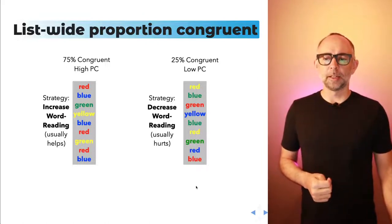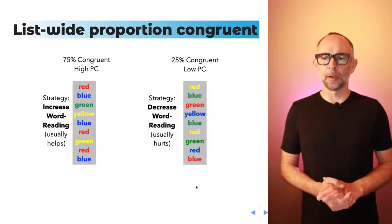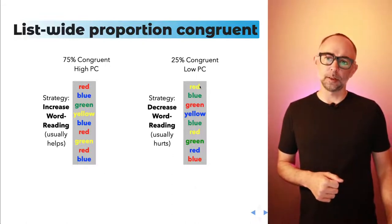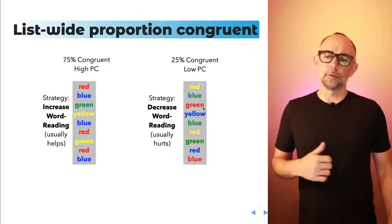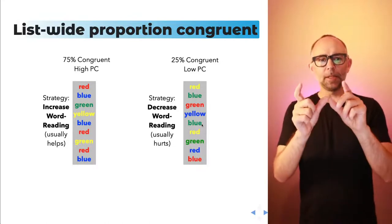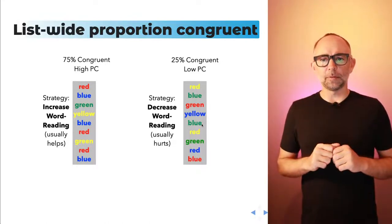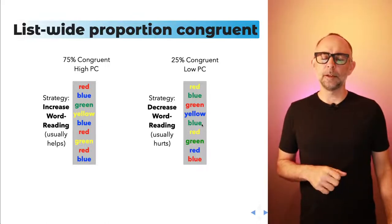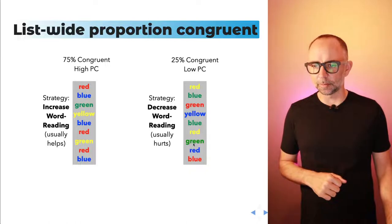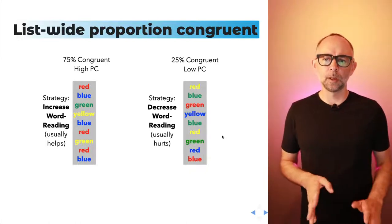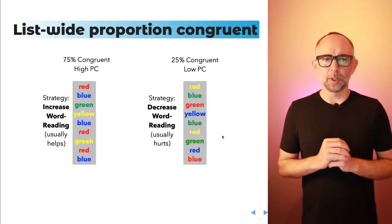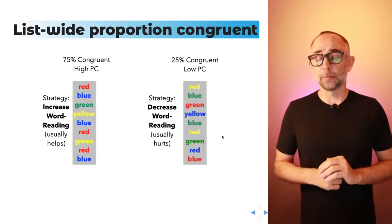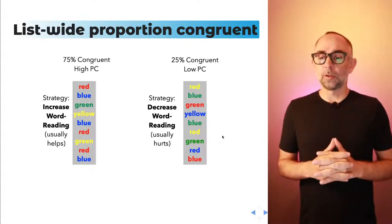Over here we have a different situation — a Low Proportion Congruent list where most items are incongruent: yellow in red, green in blue, red in green, blue in yellow, and so on. Almost every time, the word gives you the wrong answer. So you have to really try to ignore that word almost every time and focus on the color. Every once in a while the word and color will match, but not very often. If most trials require ignoring the word, you might practice doing it better, and you might decrease the Stroop Effect.